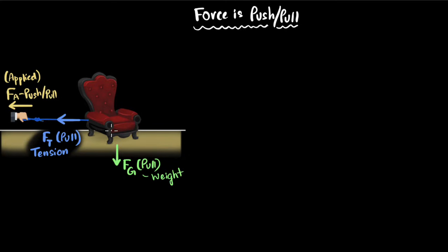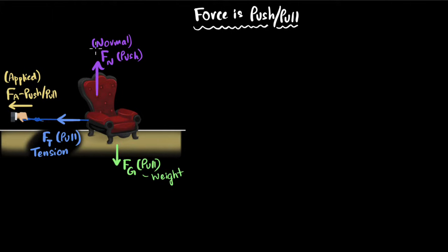But now we can ask, why isn't the chair just falling down due to gravity? Because the floor doesn't allow it. The floor pushes back up on the chair, and this force with which the floor is pushing up on the chair, we call it the normal force. Why is it called normal? It's not normal as in abnormal — normal in physics or math means perpendicular. So this force is perpendicular to the surface.